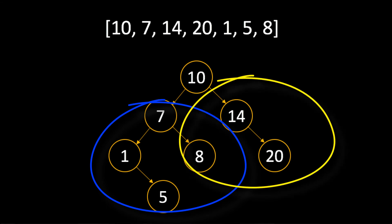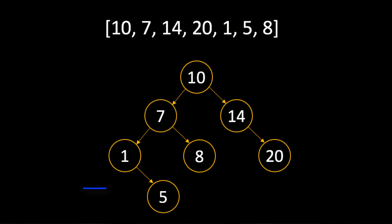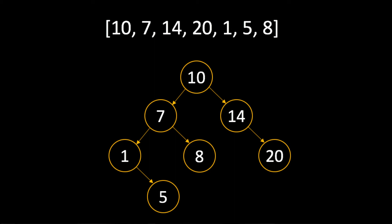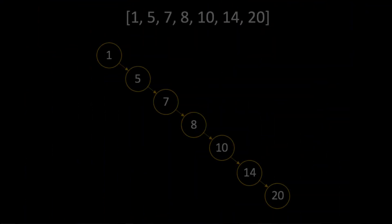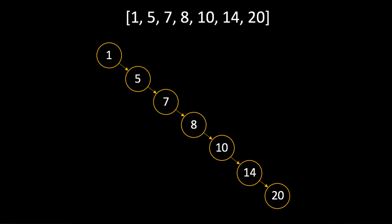If that's a little fuzzy, simply look at the right-hand side of the tree. Notice how the left-hand side is only one leaf taller than the right. That means that the tree is balanced. Now let's take a look at what an unbalanced binary search tree looks like.